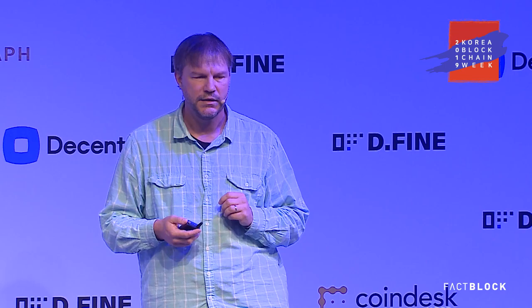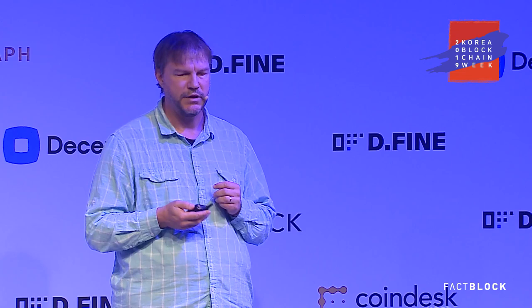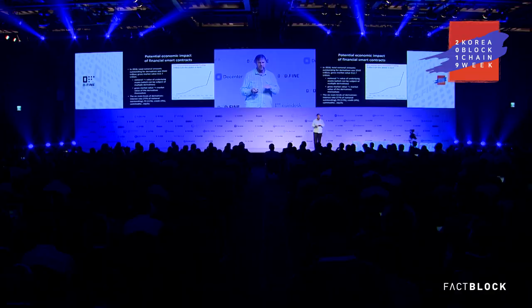Smart contracts have the potential, especially in the financial area, to break through that, along with trust-minimized seizing or freeing of collateral as post-performance incentivization. The notional amount of outstanding derivatives was about $542 trillion, with a gross market value of about $2.7 trillion — a vast amount of money involved.